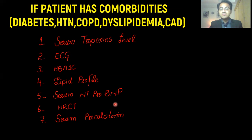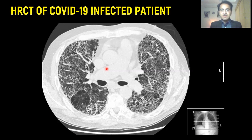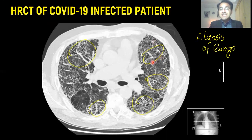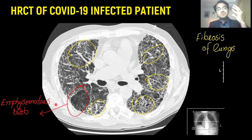High-resolution CT of the lungs will tell you about the severity of damage to the lungs. Serum procalcitonin level is an inflammatory mediator that will be elevated in an inflammatory process like COVID-19. This is an HRCT of a patient with COVID-19 infection. The white areas are not normal — the lungs should be black. White patchy areas show fibrosis and damage to the lung. You can also see ballooning of the alveoli, which are emphysematous blebs formed due to lung damage by COVID-19.